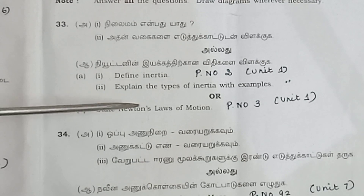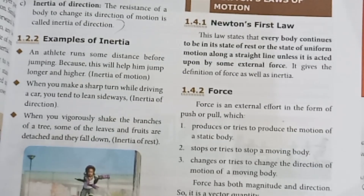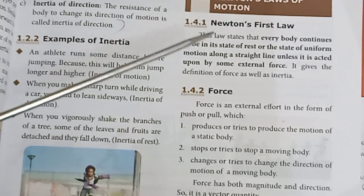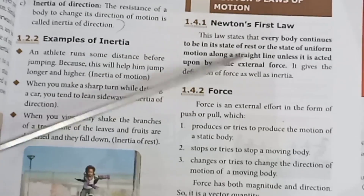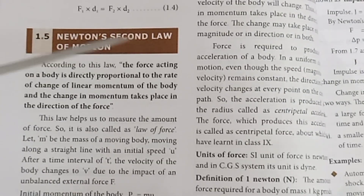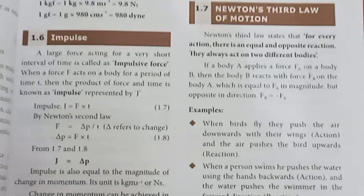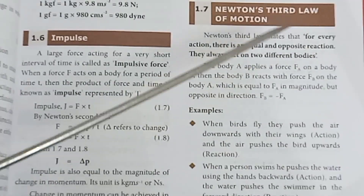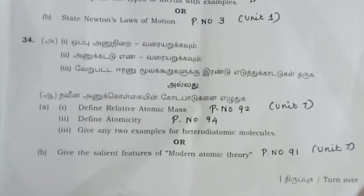Question 33 (continued): State Newton's laws of motion. Page numbers 3 and 6, Unit 1. Newton's first law: a body continues in its state unless an external force acts on it. Newton's second law: force is proportional to the rate of change of momentum in the direction of the force. Newton's third law: for every action there is an equal and opposite reaction acting on two different bodies.